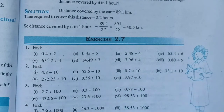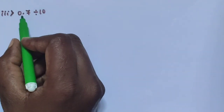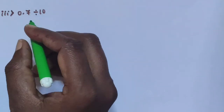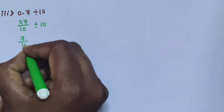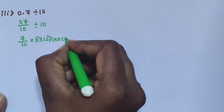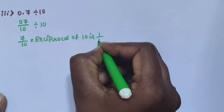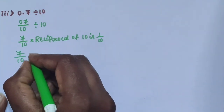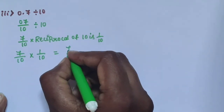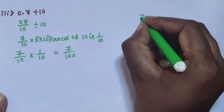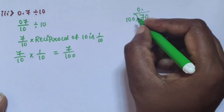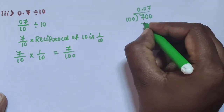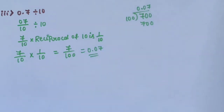Next, sub question 3: 0.7 is divided by 10. Using the same process, one number is on the 10th place, so divide by 10. The division sign can be removed using a reciprocal of fraction. 7 divided by 10 into 1 by 10. Multiply: 7 ones are 7, 10 tens are 100, giving 7 divided by 100. 7 is smaller than 100, so apply 0.0. 70 is also smaller than 100, add a zero. 100 sevens are 700. The answer is 0.07.